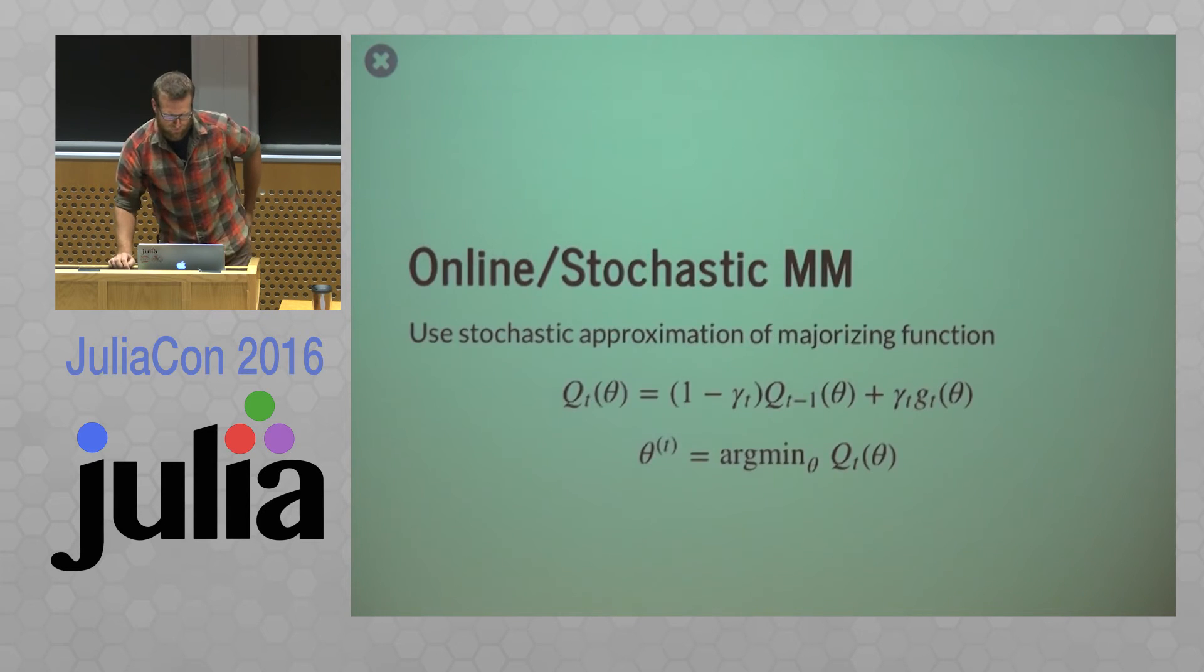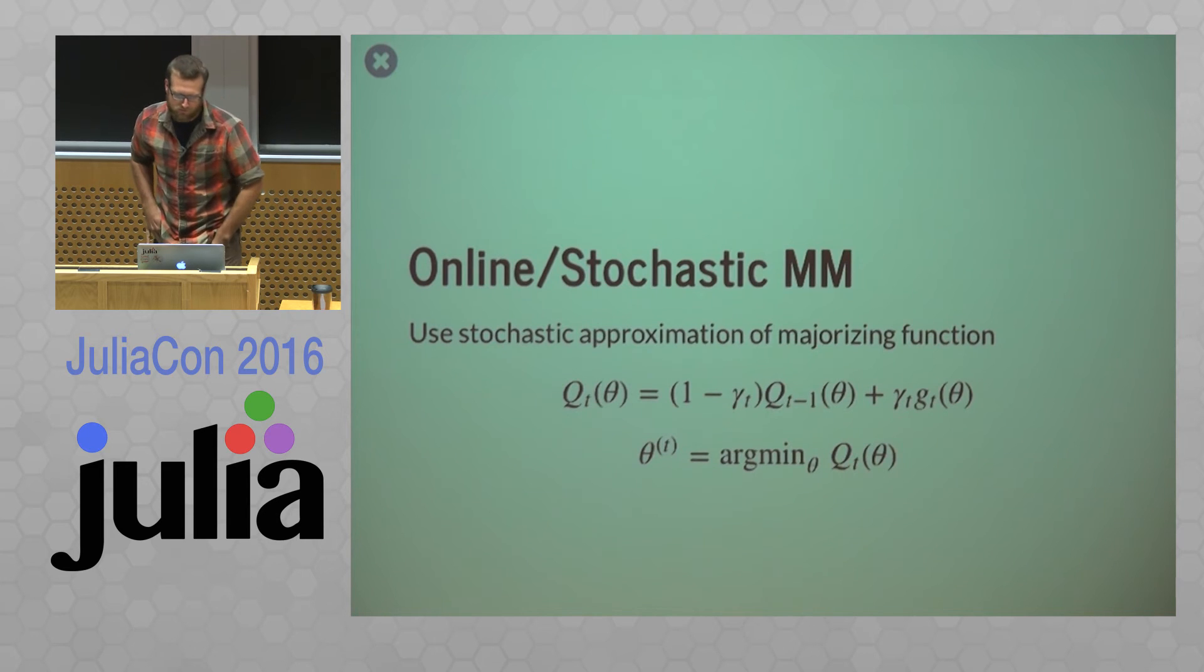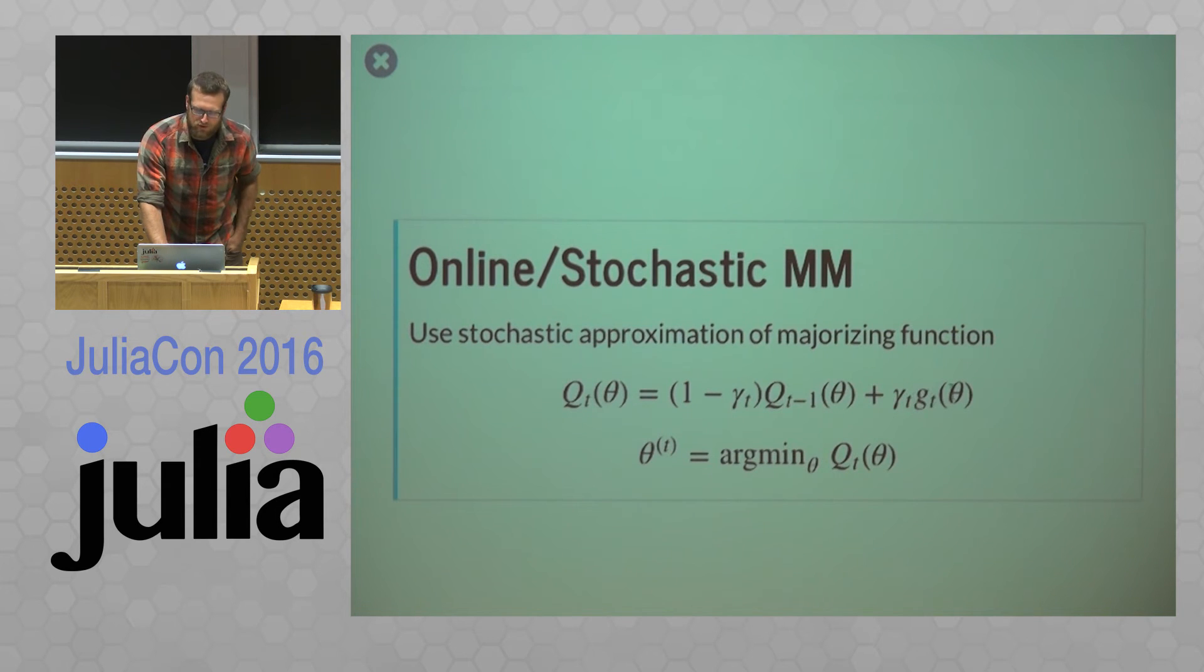So for online or stochastic MM, so we use a stochastic approximation of that majorizing function. So again, like I showed before with online mean, so we get this kind of weighted average looking thing. So we have this q function, which is our overall stochastic approximation of these majorizing functions. And we iteratively kind of weight in the value of a new majorizing function of one new data point.